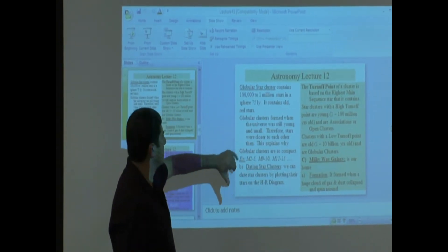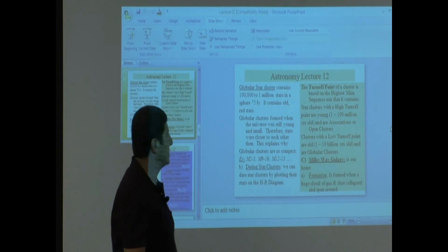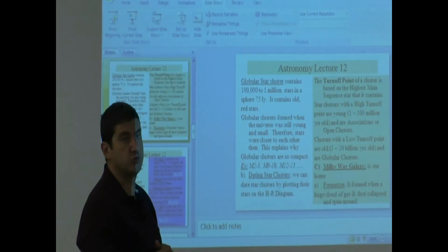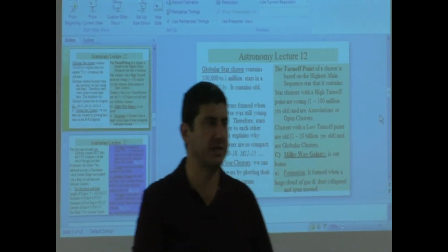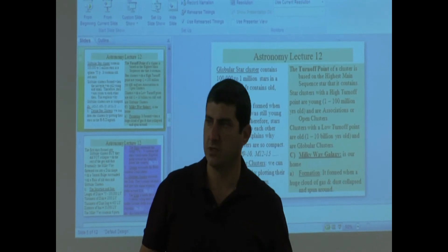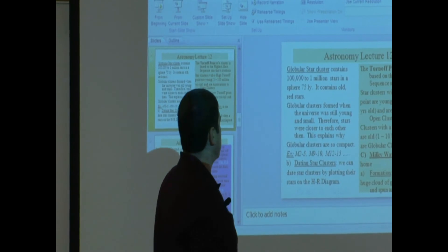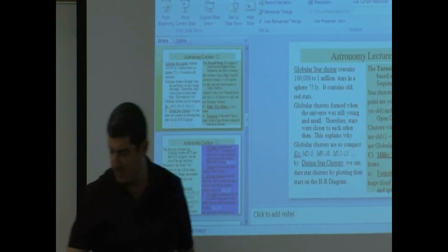Globular cluster contains many, many more stars. 100,000 to 1 million stars in a sphere of 75 light years. It contains old red stars. That means the blue bright ones have all died. Because remember, those are the first ones that die. They die very quick. So this one has a lot, lot more stars. Very, very densely packed.